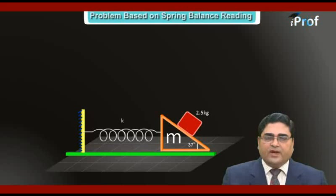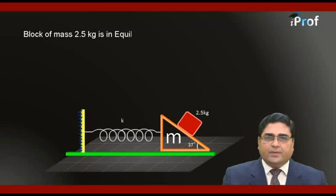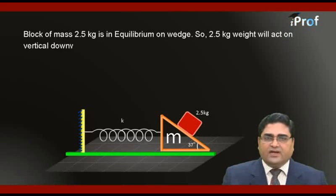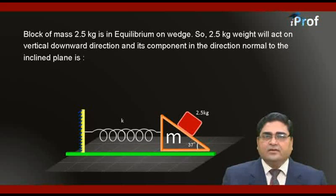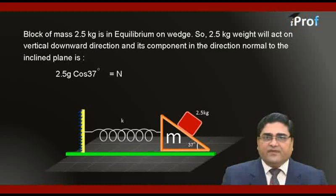Since block of mass 2.5 kg is in equilibrium on wedge, make the component of weight of 2.5 kg. The 2.5 g weight will act in vertical downward direction, and its component in the direction normal to the inclined plane is 2.5 g cos 37. That will be equal to normal reaction exerted by the wedge on the block.